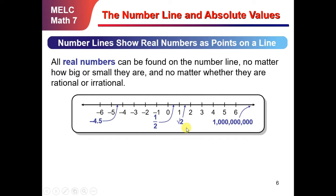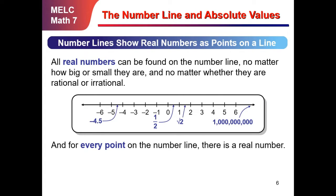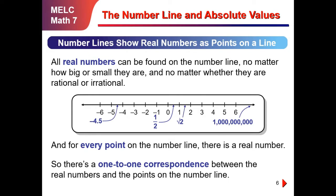Let's consider this diagram. This is a number line with negative numbers, zero, and positive numbers. Negative 4.5 is a number between negative 4 and negative 5. One-half, a rational number or a fraction, is considered to be found between 0 and 1. The square root of 2 is found between 1 and positive 2, and the 1 million number will be found on the continuation of this number line on the right side. For every point on the number line, there is a real number, so there's a one-to-one correspondence between the real numbers and the points on the number line.